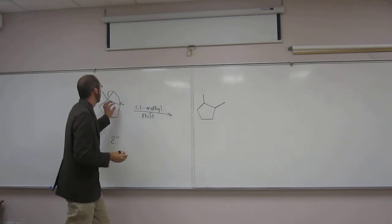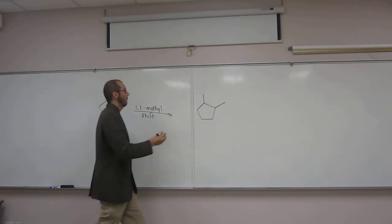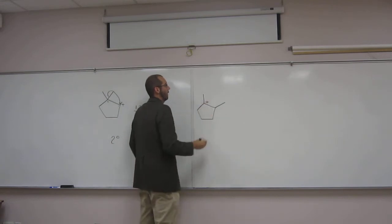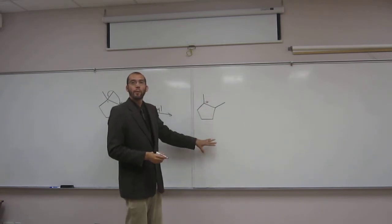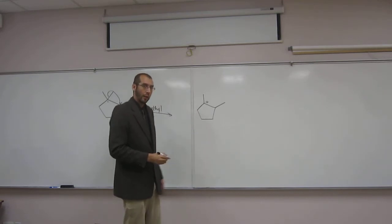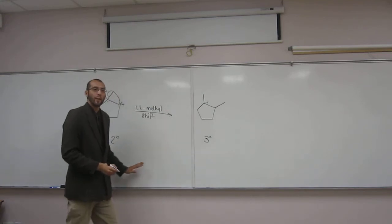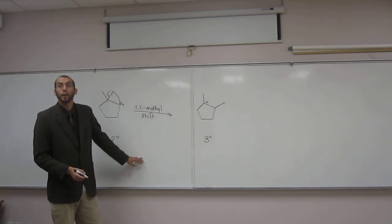Okay, so when we do that, where does the plus charge end up? Yep, on the top carbon network. So, what type of carbocation do we have here? Tertiary. Tertiary. So is that more stable than a secondary? So that will happen.